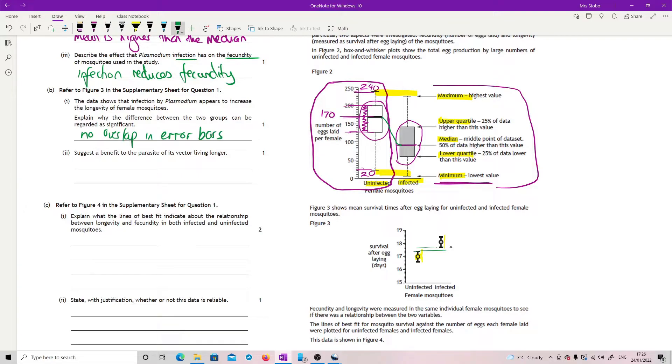Okay, suggest a benefit to the parasite of its vector living longer. Basically this is the idea that if you're super effective at killing your host or your vector, you're not going to get very far. So longer life of the vector means longer to pass on.